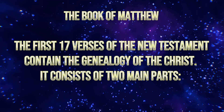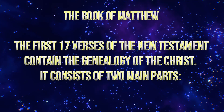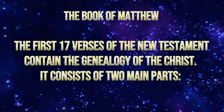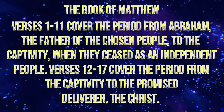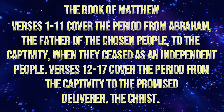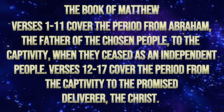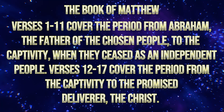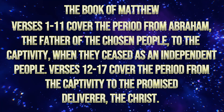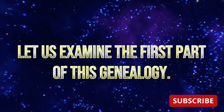In the book of Matthew, the first 17 verses of the New Testament contain the genealogy of the Christ. It consists of two main parts. Verses 1 through 11 cover the period from Abraham, the father of the chosen people, to the captivity when they ceased as an independent people. Verses 12 through 17 cover the period from the captivity to the promised deliverer, the Christ. Let us examine the first part of this genealogy.